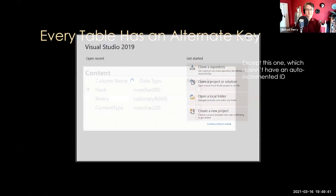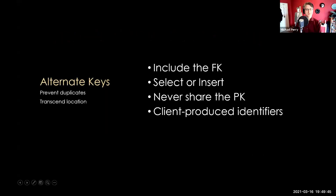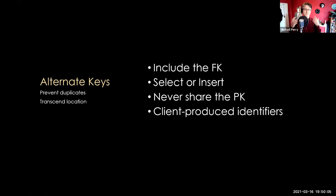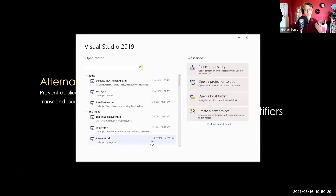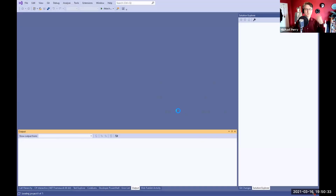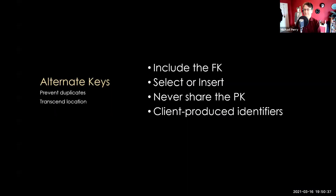So to summarize the alternate keys pattern: include foreign keys within the alternate keys of child tables; perform a select-or-insert pattern to see if the record is there and insert if not; never share the public key outside of the database itself — it's not exposed as part of the API. The client produces and stores those identifiers, or in this case the server redirects and gives the client the identifier. That's partly because JavaScript may not be as good at generating GUIDs, but in general it's the client application's responsibility to come up with those identifiers.